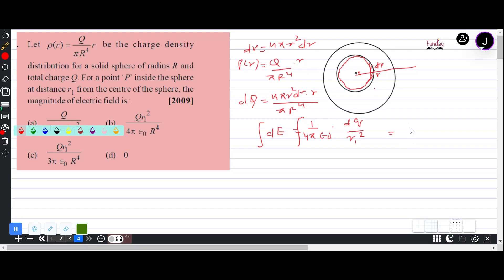Okay, so what we'll do is we'll integrate on both sides. We get electric field at r₁ distance from center, which is what that sphere is all about. So we'll integrate from 0 to r₁. So this equation will integrate: 4πr³dr/(πR⁴) × Q × (1/4πε₀r₁²).